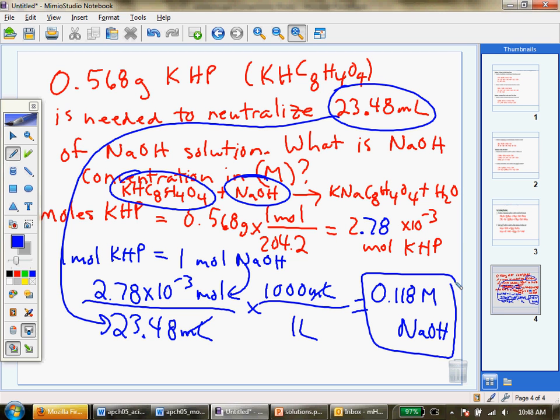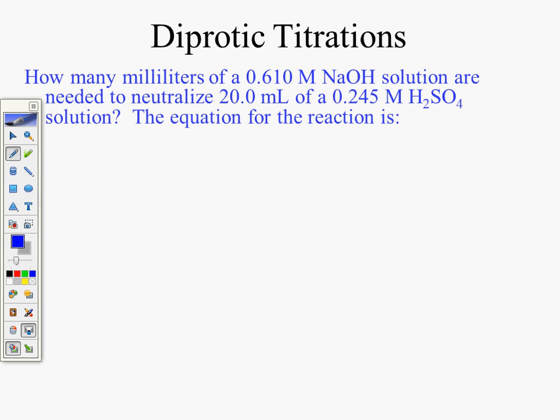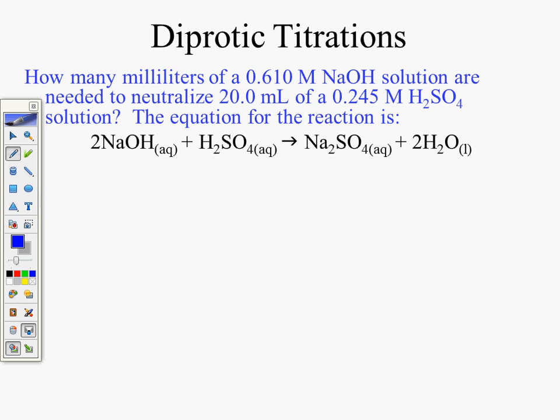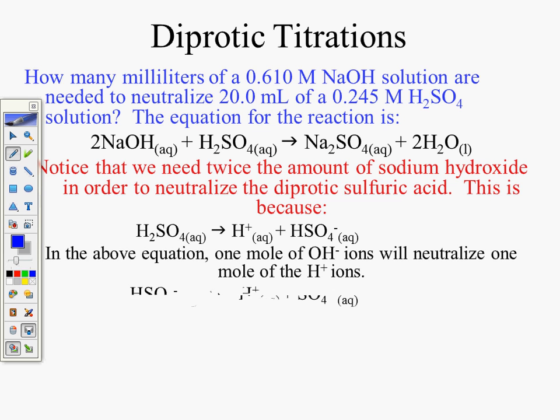Next problem: how many milliliters of 0.610 molar NaOH are needed to neutralize 20.0 mL of 2.245 molar sulfuric acid (H₂SO₄)? The balanced equation shows that sulfuric acid is diprotic — notice we need twice the amount of NaOH as H₂SO₄ to neutralize it, because H₂SO₄ ionizes twice.